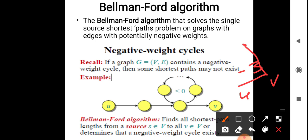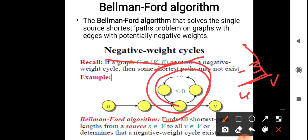What is a negative weight cycle? If an edge UV has a negative weight, it is known as a negative weighted edge. A negative weight cycle occurs when there is a cycle in the graph such that the sum of the edge weights of that cycle is less than zero. If the total sum of edge weights around a cycle is less than zero, we say that the graph has a negative weight cycle.